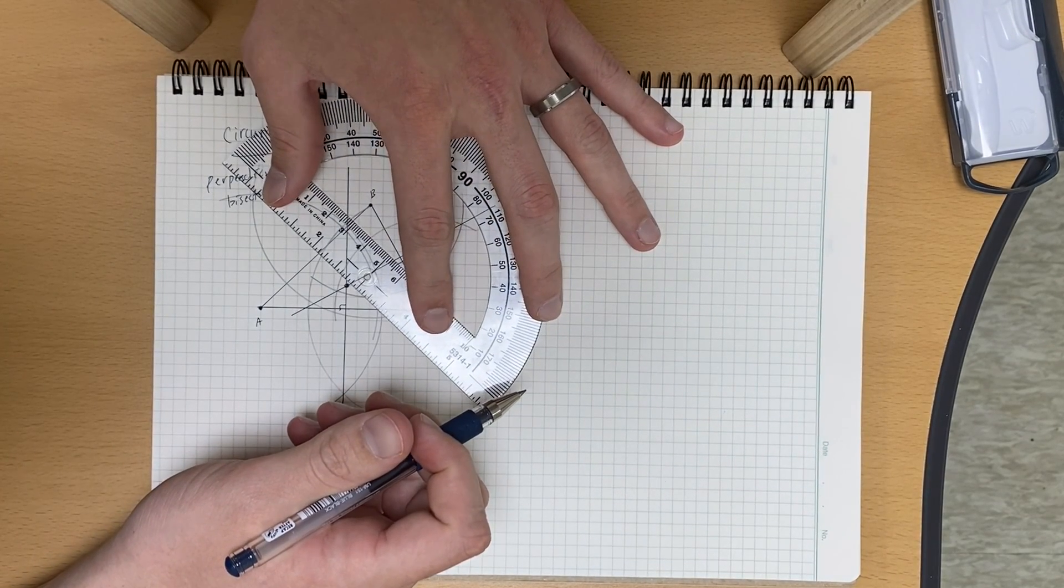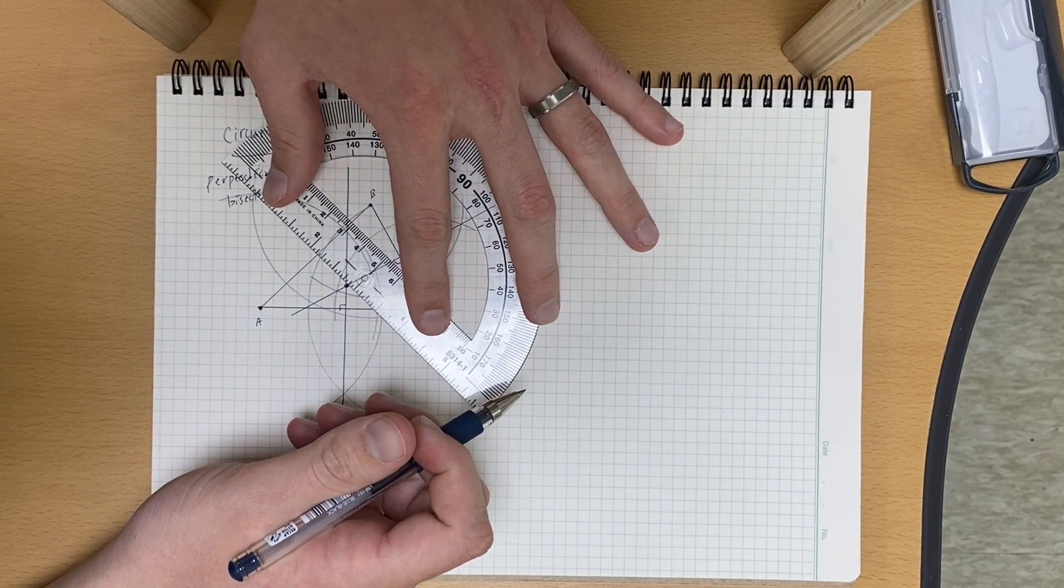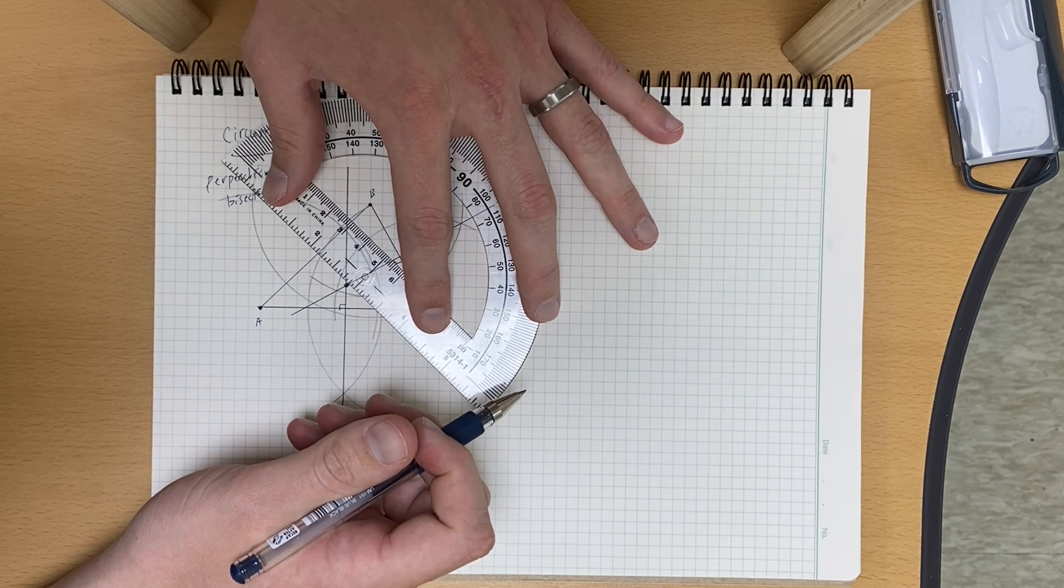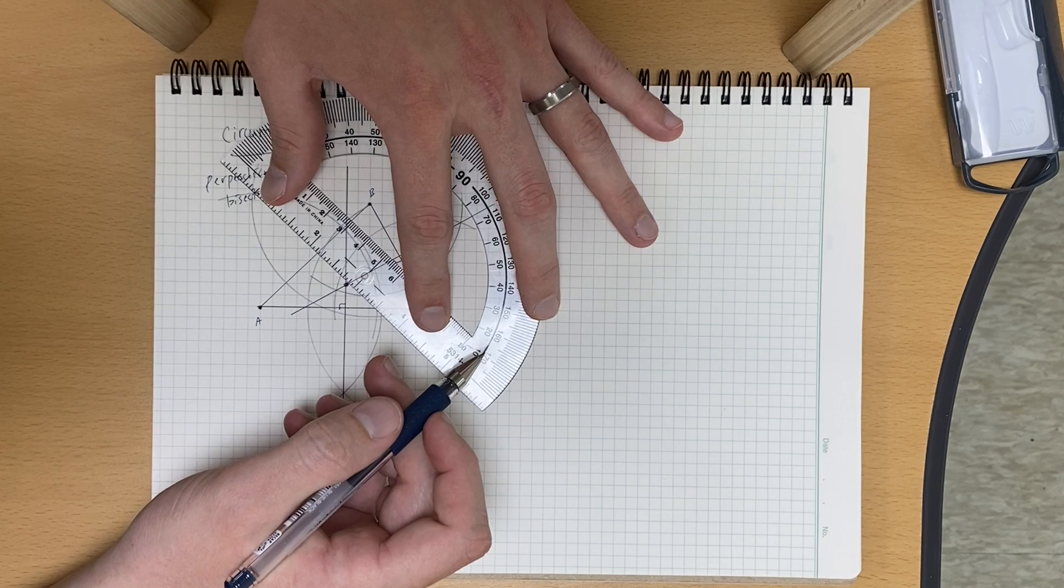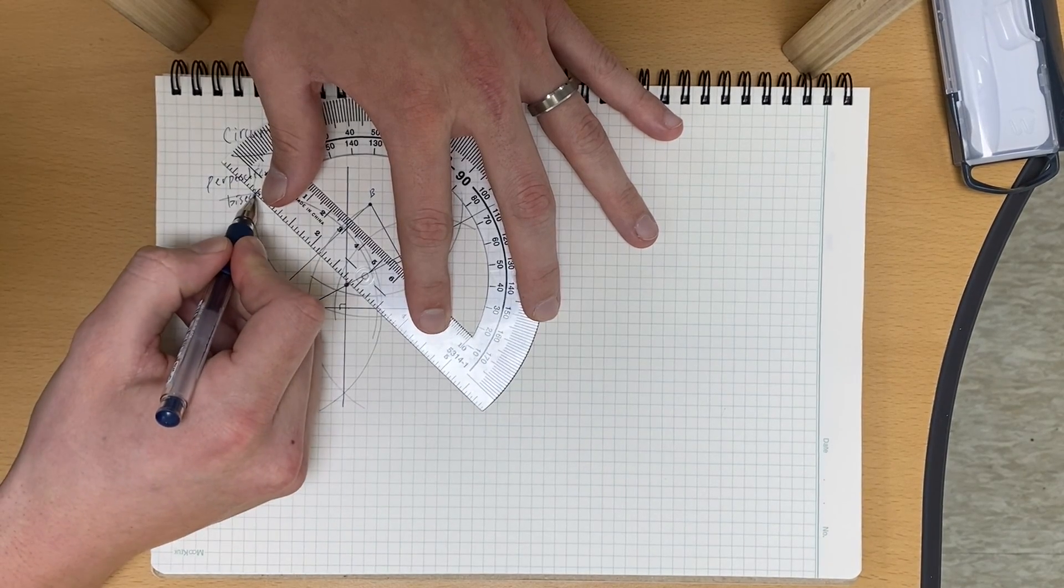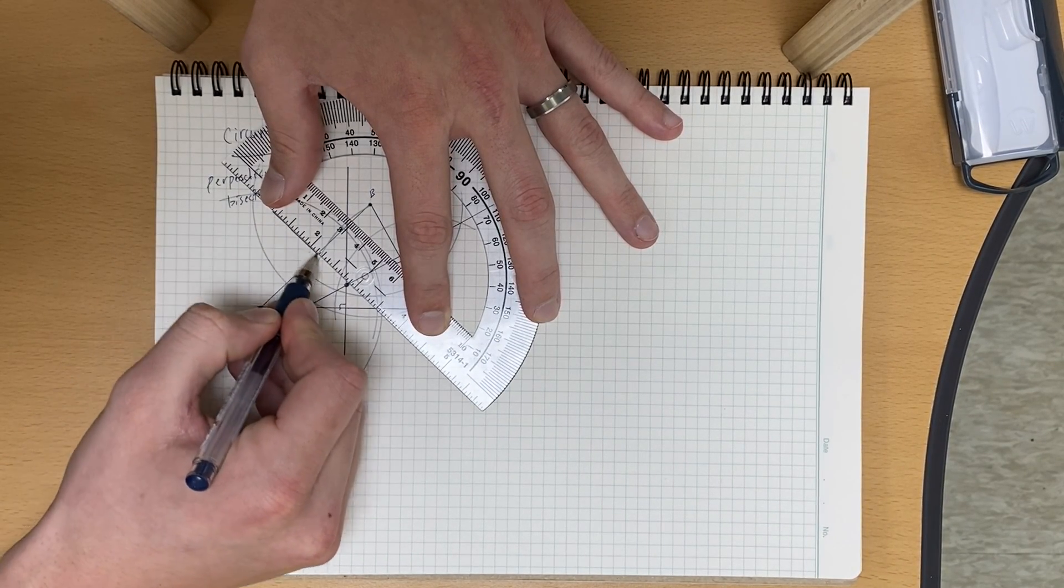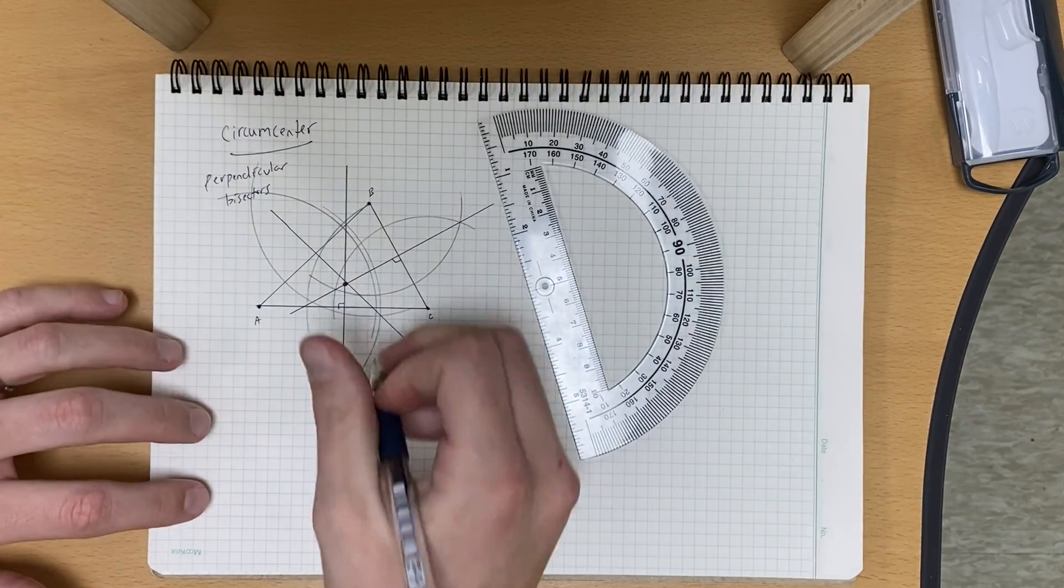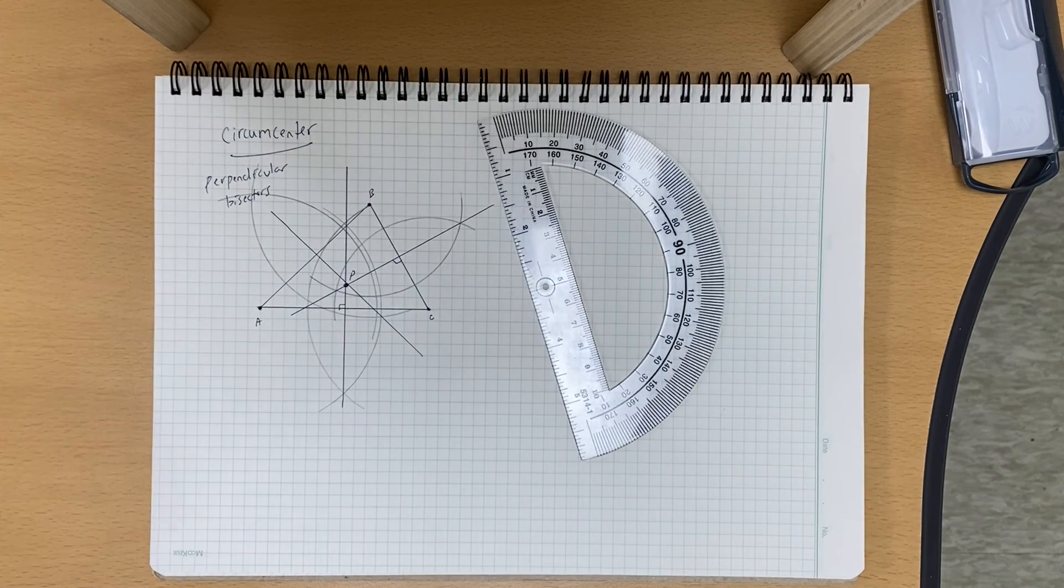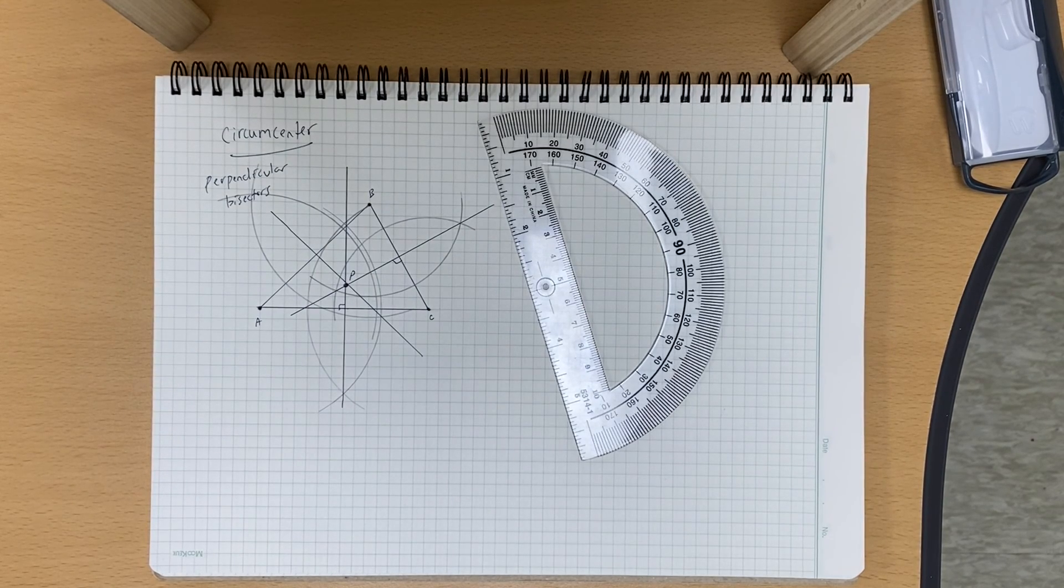All right, so as we get ready to draw our line here, you can see that this line will pass through our point of intersection of our other two lines. So now we'll call this point P, and point P is our circumcenter.